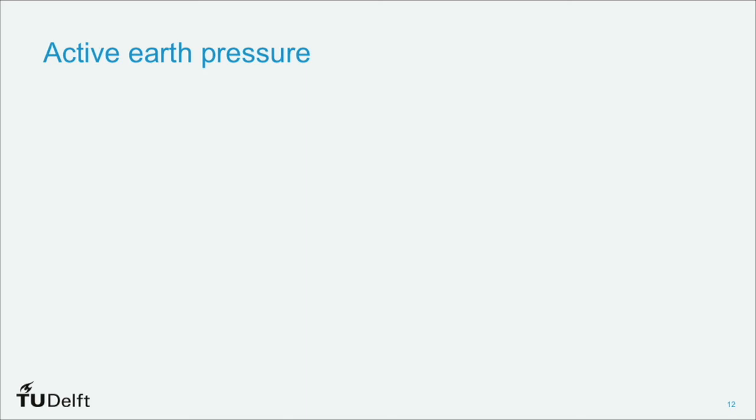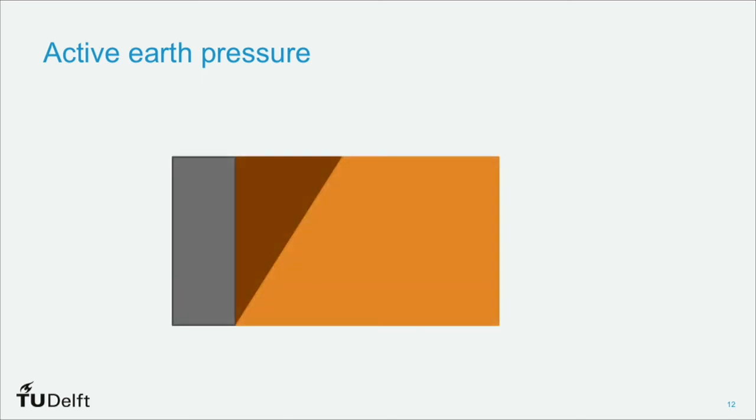If we now look at the active earth pressure situation, and this is where the wall is moving away from the soil, so the soil is pushing on the wall, we see that the angle that's defined by the failure wedge and the soil that remains is a much bigger angle, and we end up with a much smaller triangle of soil. And as the wall continues to move away, this triangle of soil moves down and causes a failure.